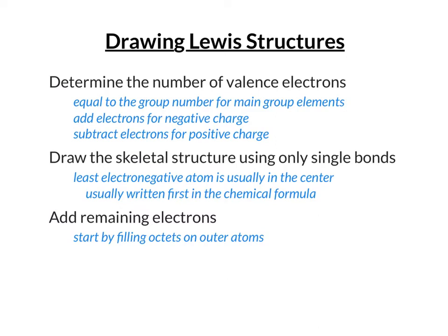As you fill octets on outer atoms, a few things can happen: you might run out of electrons before everything is filled, you might fill all outer atoms exactly, or you might have extra electrons left over. If you have extra, add them to the central atom, even if that runs it over an octet. You can't add more than eight to anything unless it's a central atom.